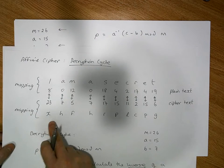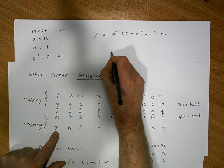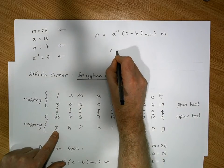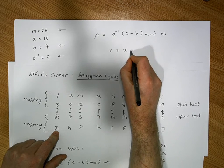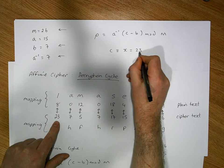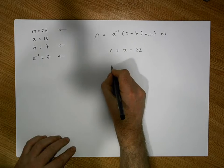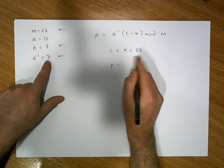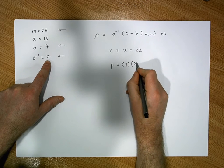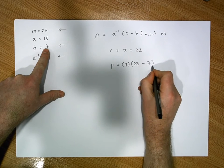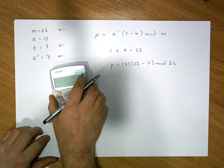Our first piece of cipher text is X. So what we know is c, the cipher text, is X — from a numerical representation that's equal to 23. So c is 23, and the plain text p should be equal to a inverse, which is 7, times c, which is 23, minus b, which is 7, modulo 26.